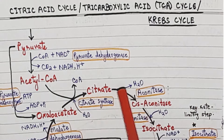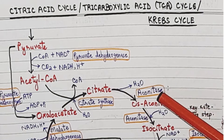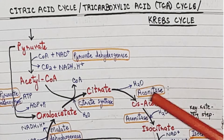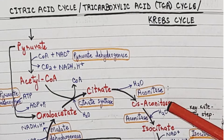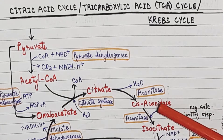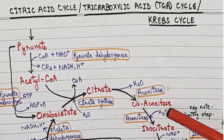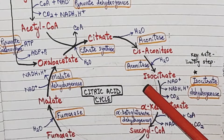Citrate is then converted into cis-aconitate by the enzyme aconitase, with water involved in the reaction. Then cis-aconitate is converted into isocitrate, again by the enzyme aconitase, and water is added.